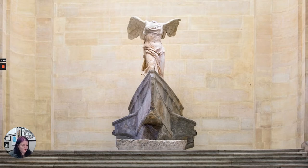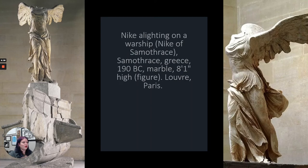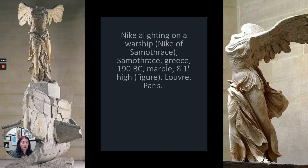This is the Nike of Samothrace. You may remember Nike from when we talked about the Acropolis — the Nike is a personification of Athena, particularly the winged victory, and this is the most famous depiction of the Nike. You can see she's lost her arms and her head, but this is one of the most famous sculptures in the Western world. Why do you think that might be? Take a minute to look at this and think about everything we've learned about Greek sculpture. Why might this be so famous?